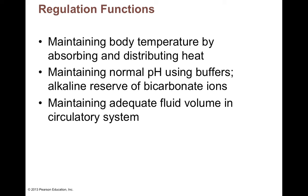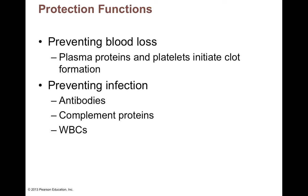Blood prevents blood loss by clotting and blocking a ruptured vessel. It also prevents infection through lots of antimicrobial products: white blood cells or leukocytes, complement proteins made by your liver, and antibodies. Complement proteins can punch holes in foreign cells. Antibodies are molecular flags that stick onto foreign antigens, causing microbes to clump up and activating complement. We'll talk more about these in the immunology chapter.